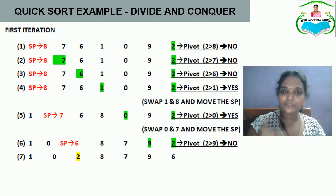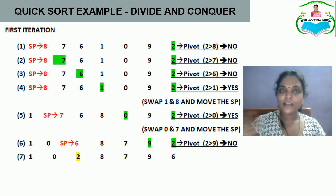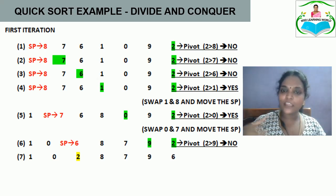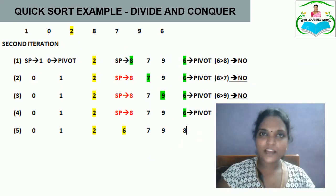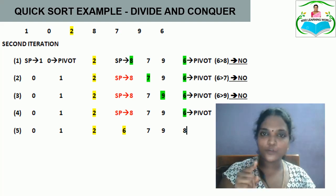After the first iteration the elements become 1, 0, 2, 8, 7, 9, 6, where 2 is placed in the third position. Elements 1 and 0 are less than 2, and 8, 7, 9, 6 are greater than 2. This completes the first iteration. Now for the left subarray and right subarray, the divide process happens again.